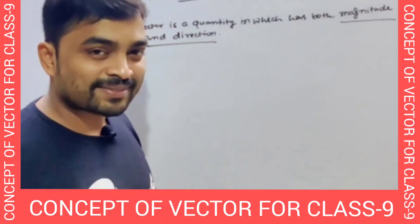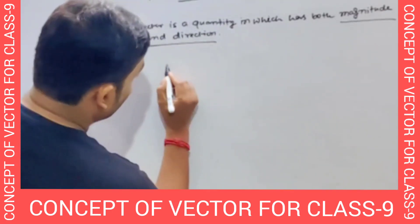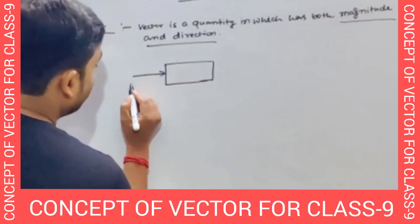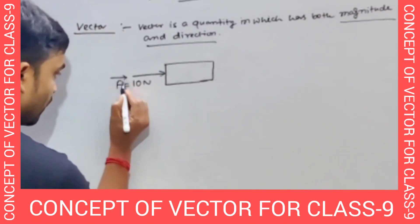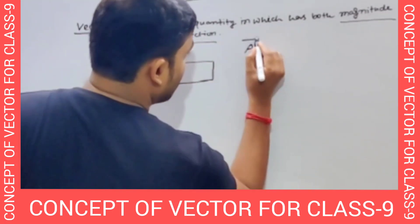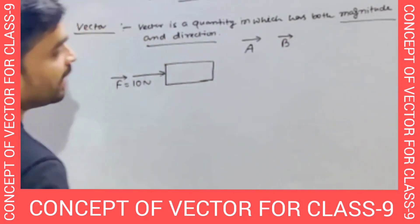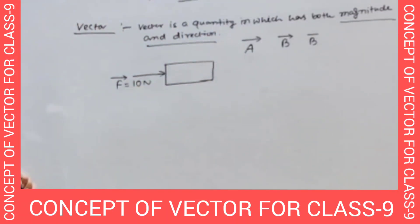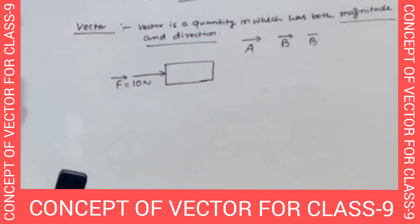For example, force. It has a direction — which direction is the force applied? Think about this block. A 10 newton force is applied: F = 10 newton. This is the vector symbol. A vector is represented with an arrow. If you don't give this arrow, you won't understand the vector. The direction is represented by the arrow.